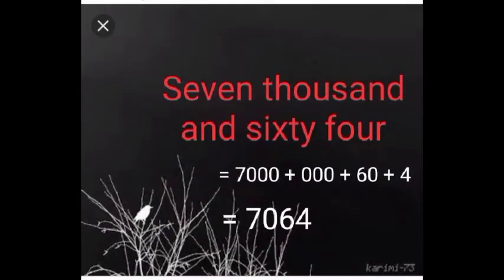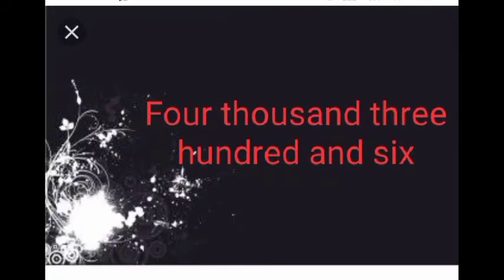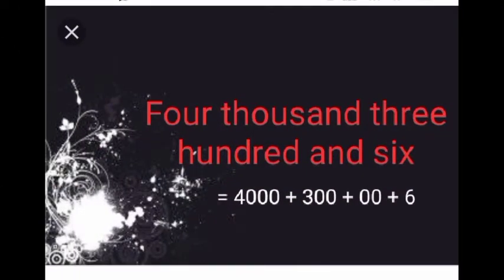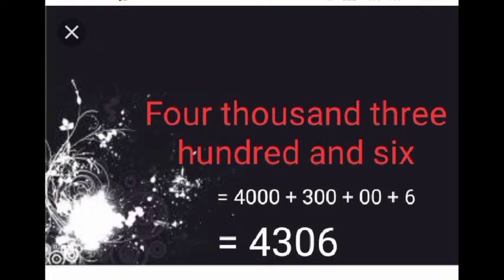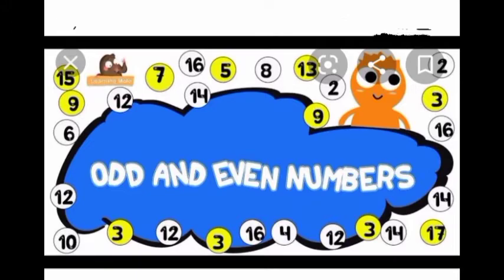So the numeral of the given number name is 7064. The second question is 4306. Write it in numeric expanded form: 4000 plus 300 plus 0 plus 6, and add the numbers. So the numeral of the given number name is 4306. Now we are going to talk about odd and even numbers.